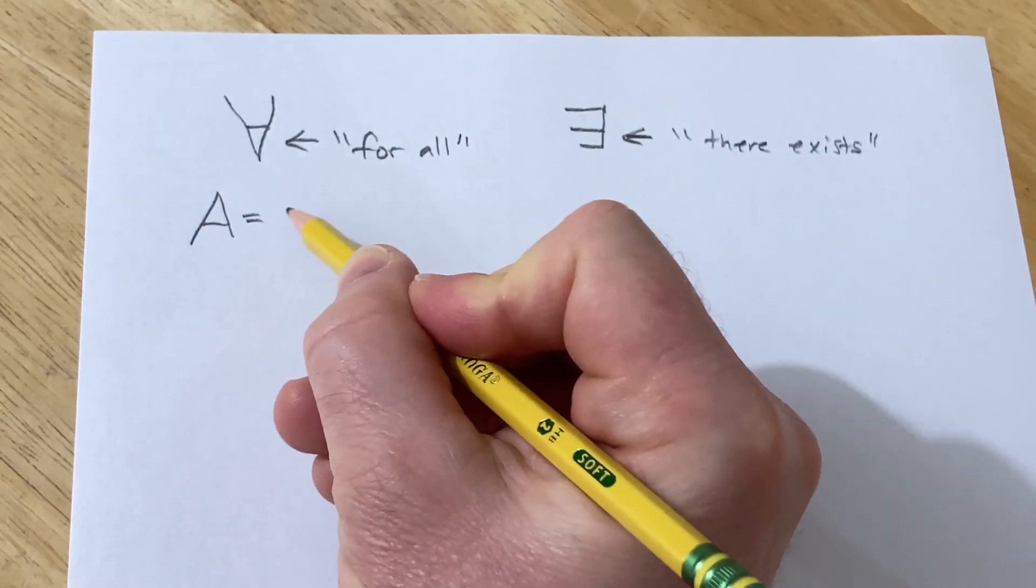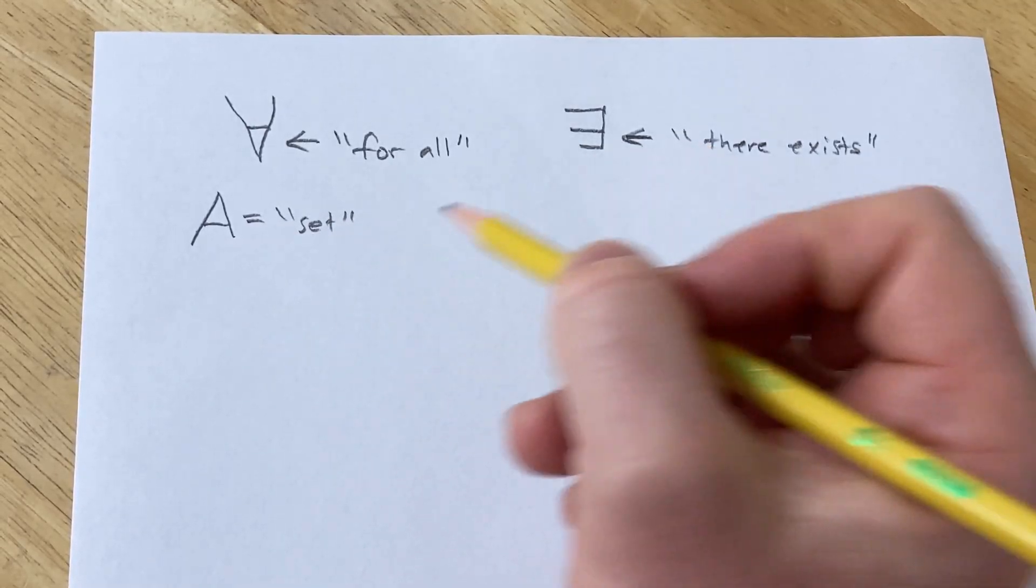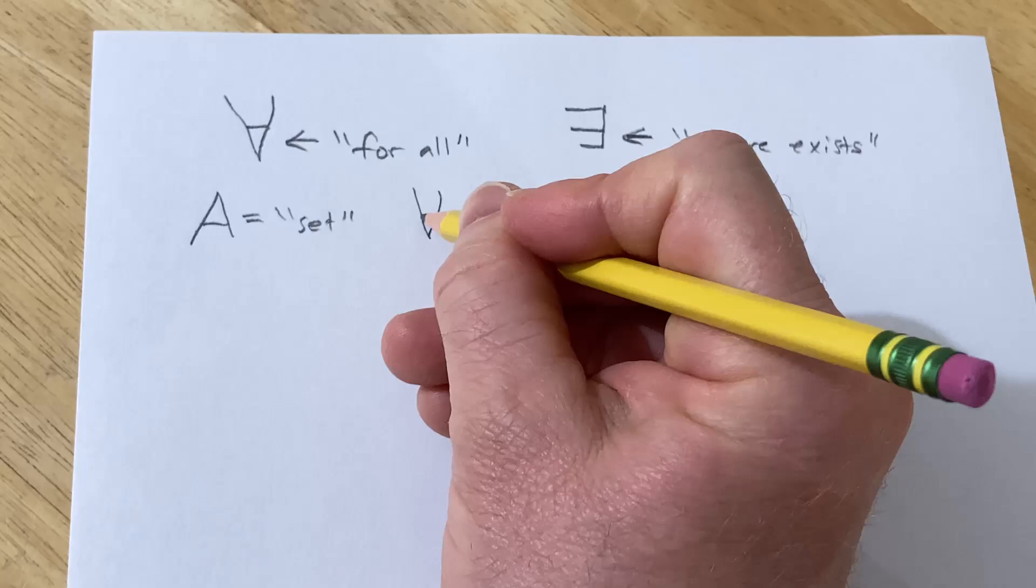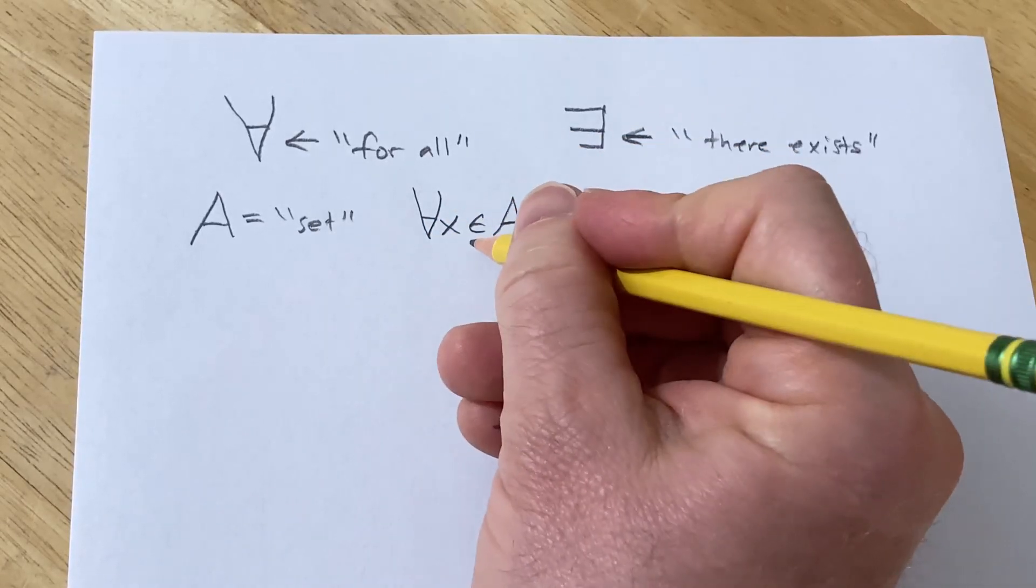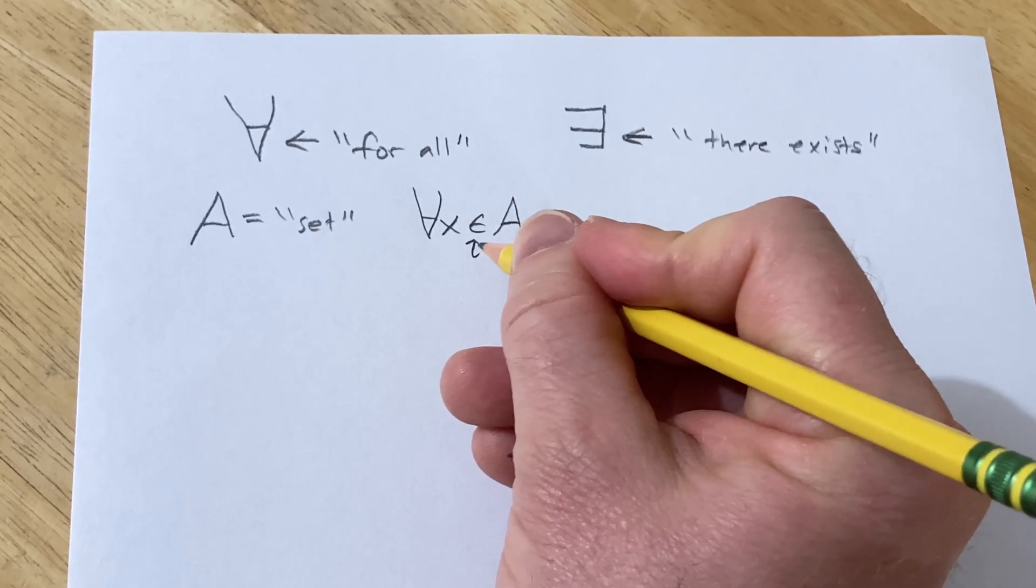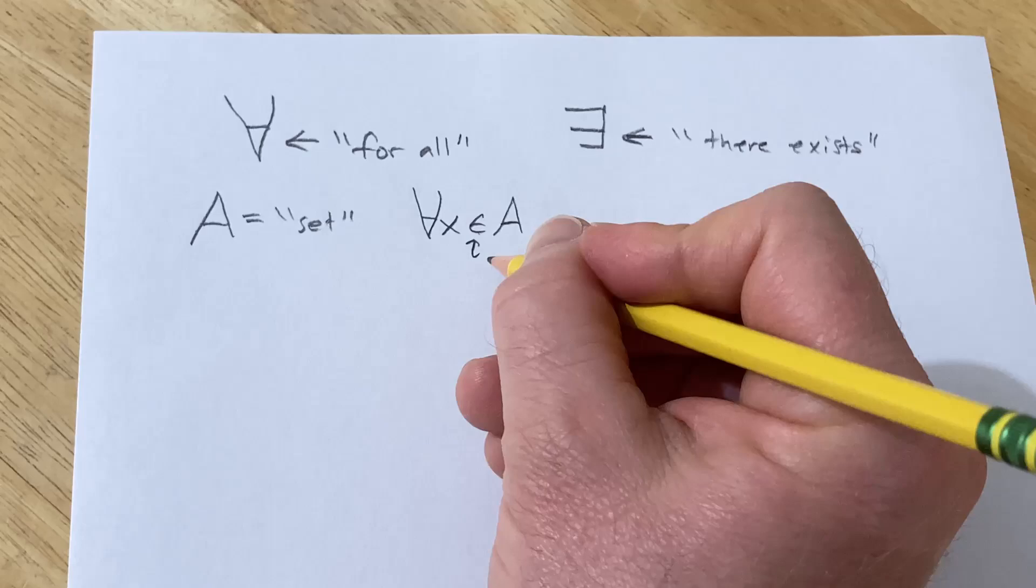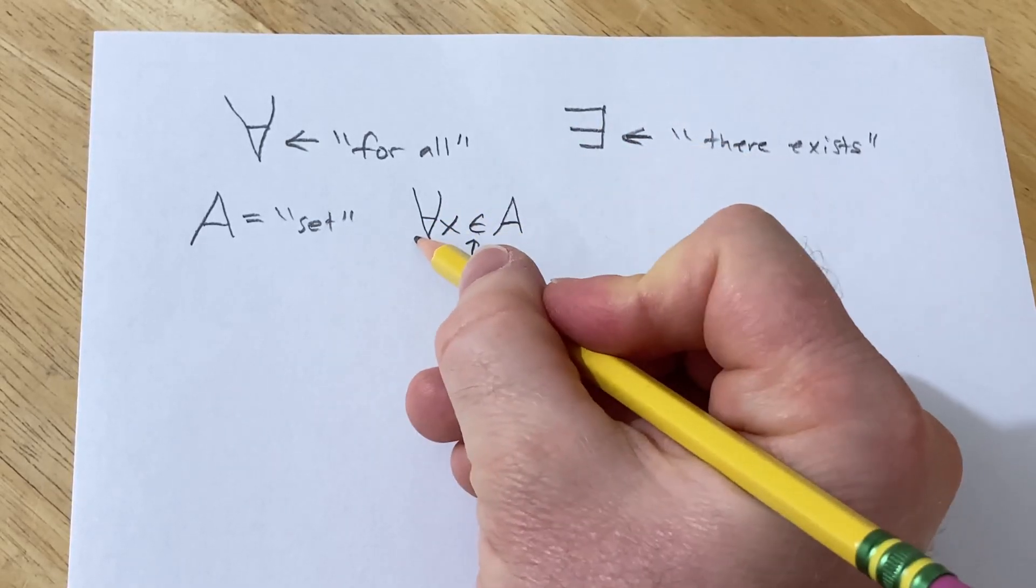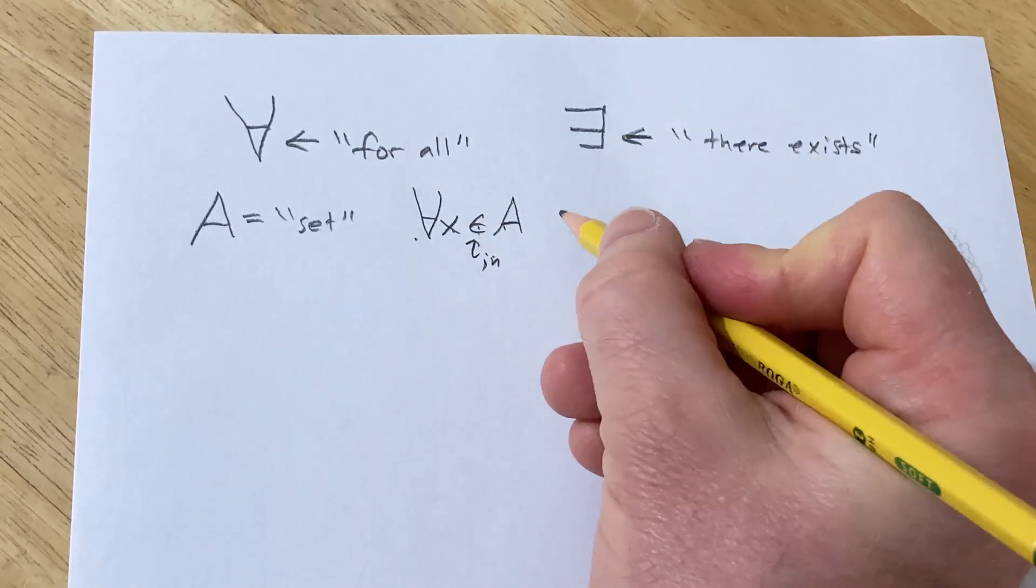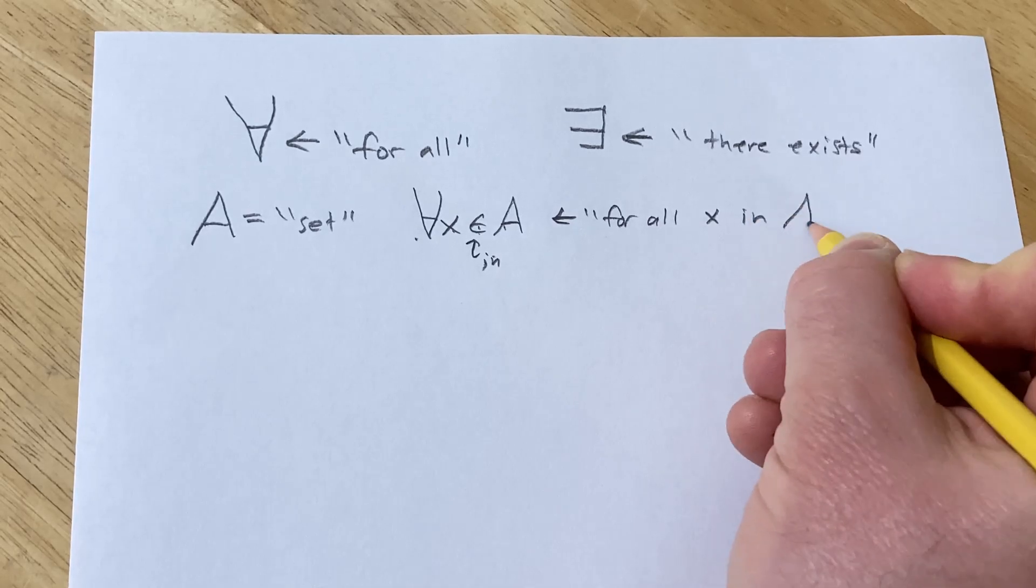All right, I'm going to let A be equal to a set. A set is just a collection of objects. So if I write for all X in A, that's exactly how you read it. And this symbol here is read as 'is in' or 'belongs to', I just read it for all X in A. So for all X in A.